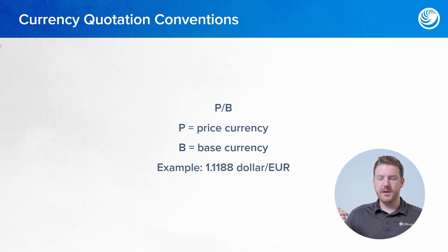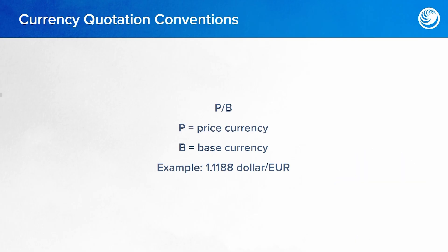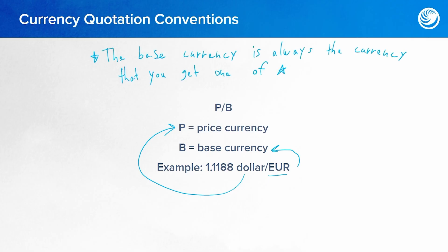An example of this would be a foreign exchange rate of 1.1188 U.S. dollars for one euro. In this case, the euro is the base currency and the U.S. dollar is the price currency. An easy thing to remember is that the base currency is always the thing that you get one of. So in this example, you can trade $1.12 for one single euro — the euro is what you get one of, so that is the base currency.